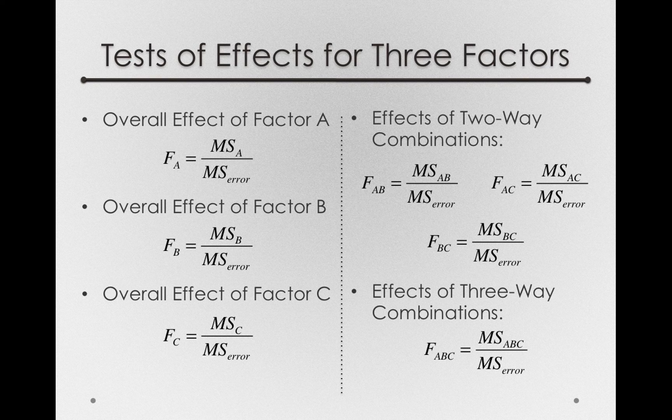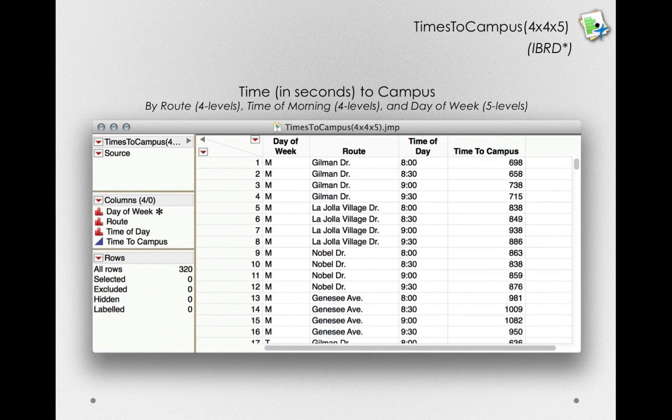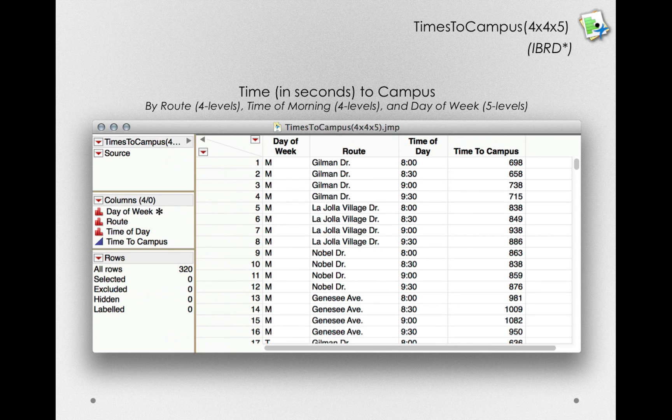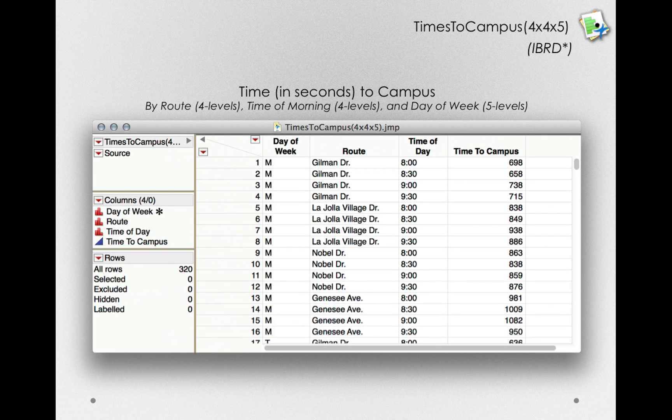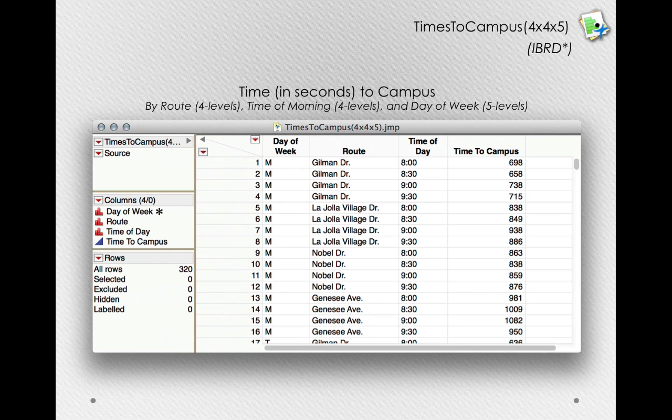To explore this analysis in Jump, we'll be using a slightly modified times-to-campus dataset, in which we have four levels of route, the same ones we've seen before, four levels for the time of morning, the same four we saw before, and finally, five levels of day of week. This gives us a 4x4x5 factorial design.